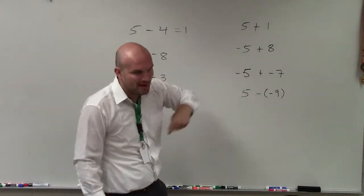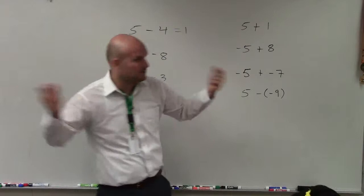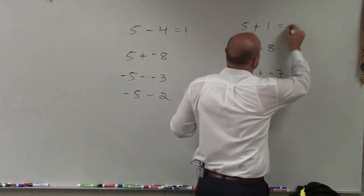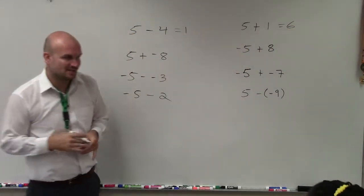And then obviously, if you have $5 in one pocket and $1 in the other pocket, then you have a total of $6. So those are the two basic ones.